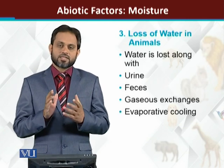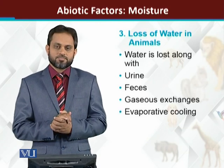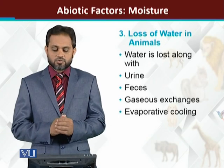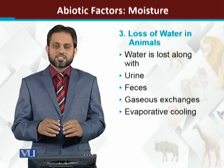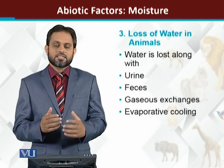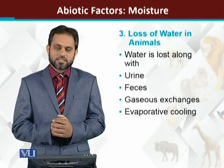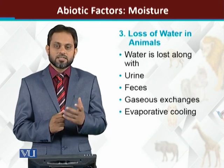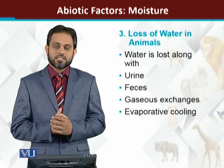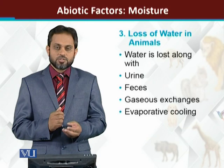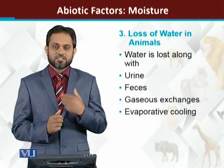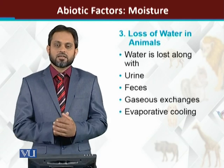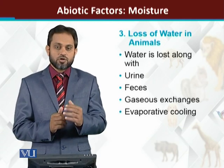What is the loss of water from animal bodies? There are different methods. Number one is urination — nitrogen waste released from the body carries a large amount of water. Normally, for one gram of urea, about 50 ml of water is released. The second one is feces, or defecation, which is the undigested digestive waste released from the body, and that also carries a sufficient amount of water along with it.